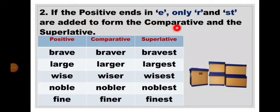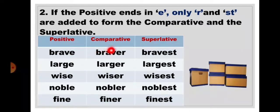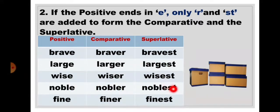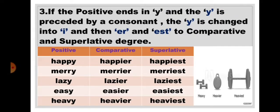Rule 2: If the positive ends in E, only R and ST are added to form the comparative and superlative degree. For example: brave — the word ends with E, so we add R to get the comparative degree braver, and ST to get the superlative degree bravest. Large → larger → largest. Wise → wiser → wisest. Noble → nobler → noblest. Fine → finer → finest.